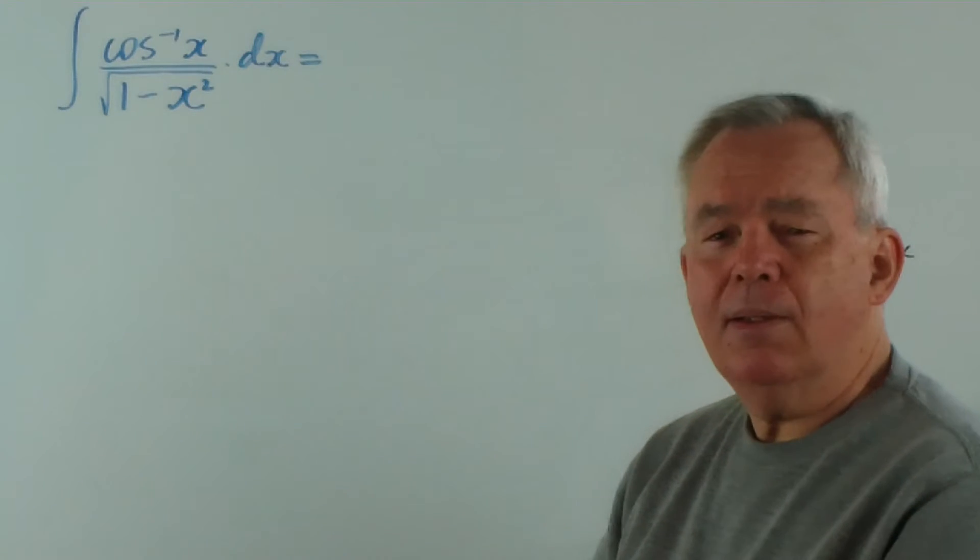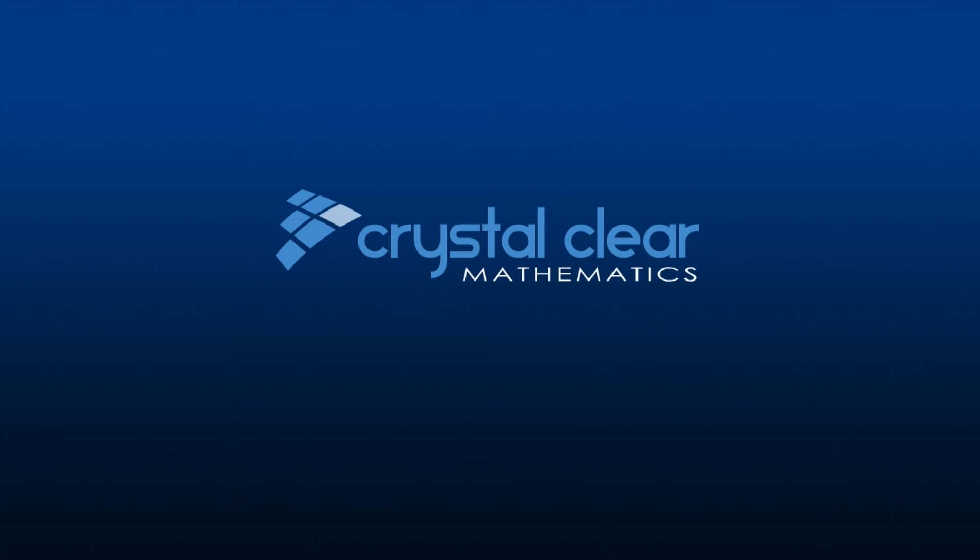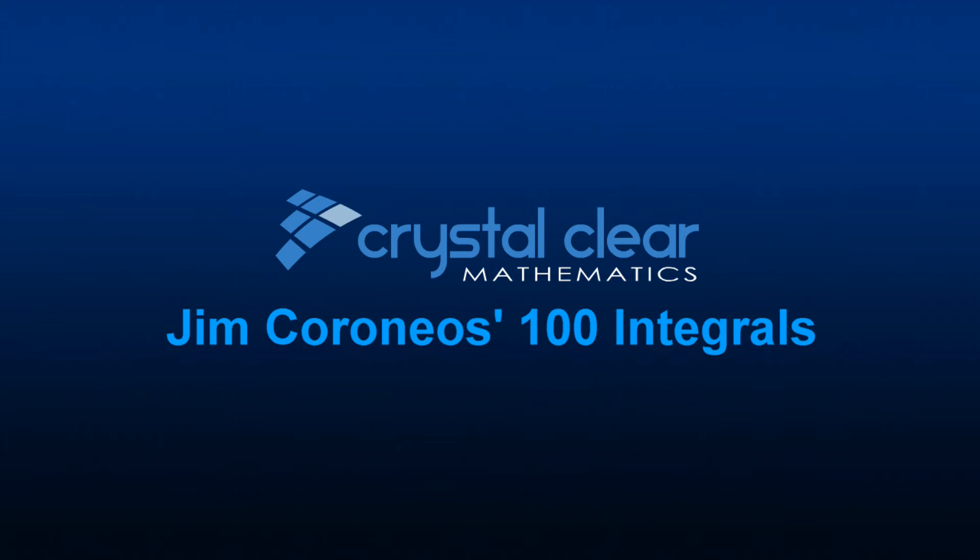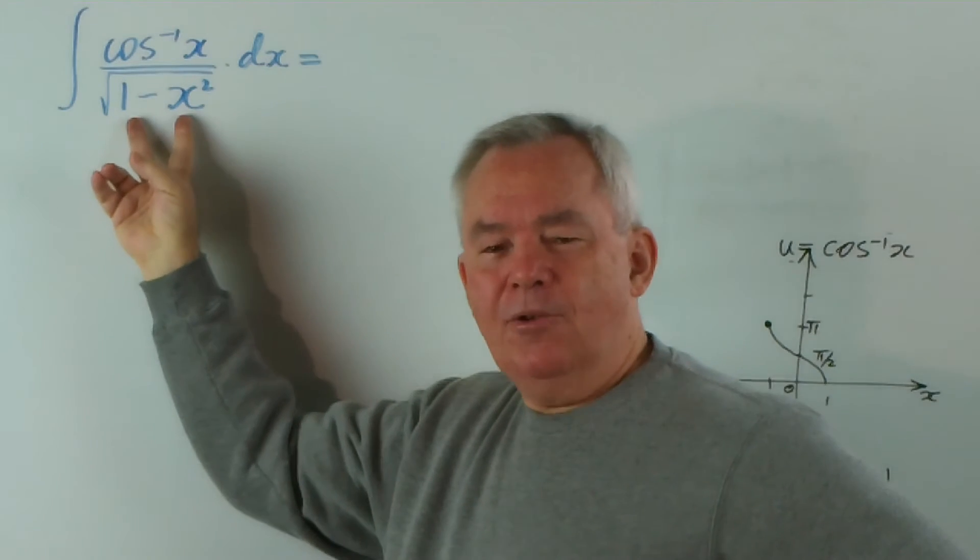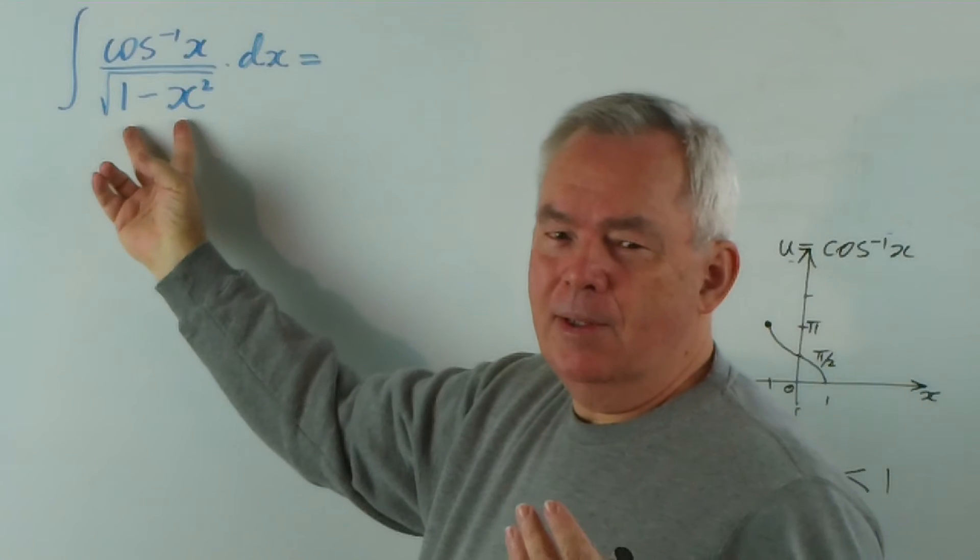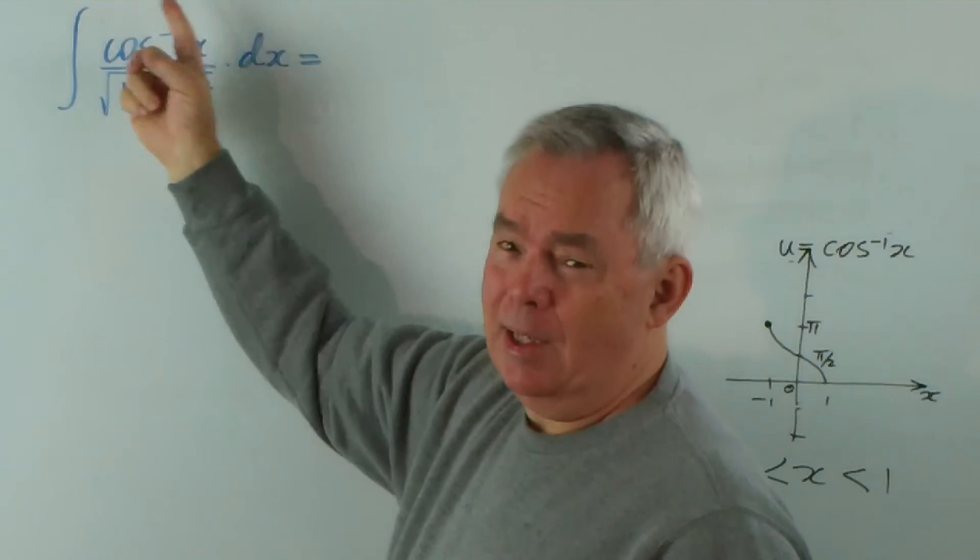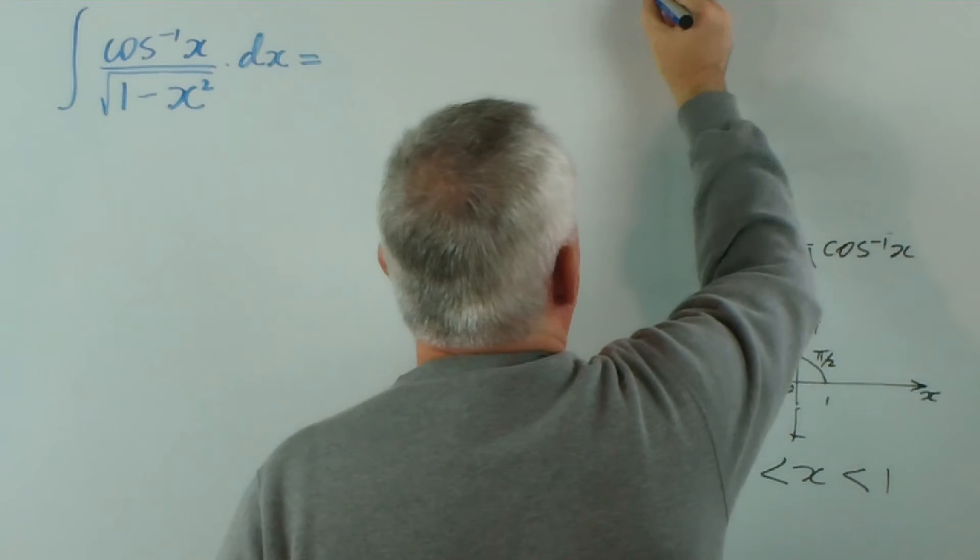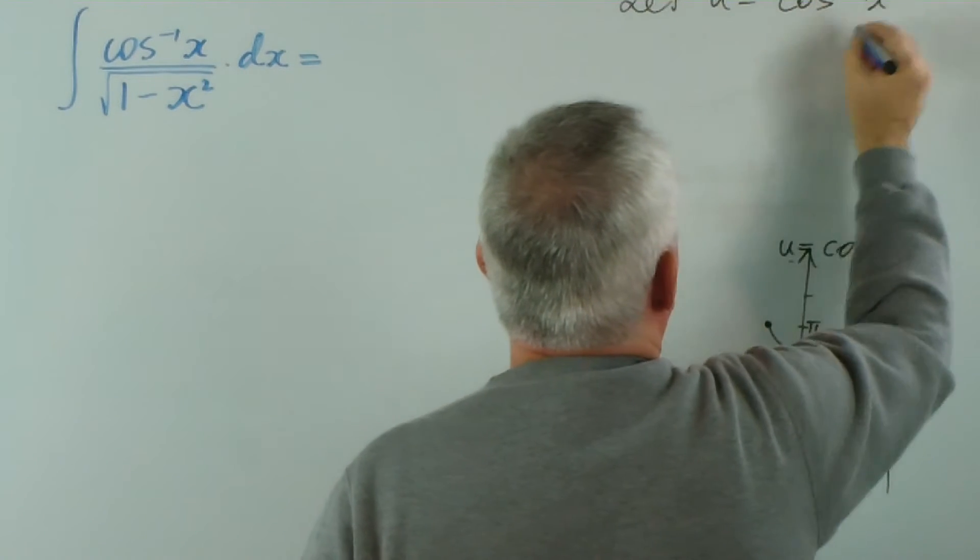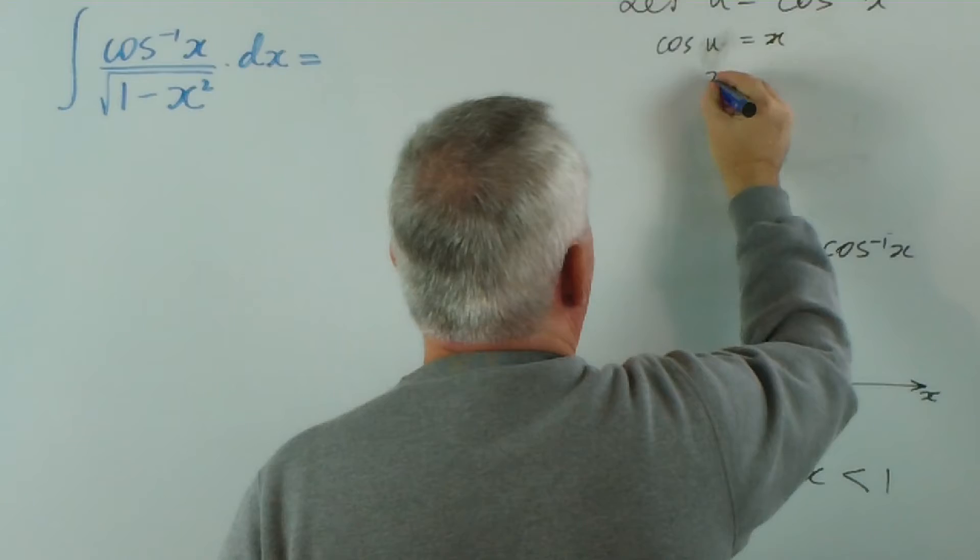Now let's go ahead and integrate, first of all by making a substitution. This here invites us to make a trigonometric substitution, that is, to use one of the Pythagorean identities. And this certainly invites us to substitute a u for the inverse cosine of x. So we'll let u equal the inverse cosine of x, which means that cos of u is x, or if you like, x is cos of u.